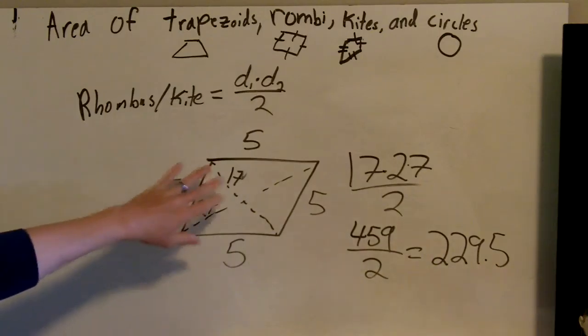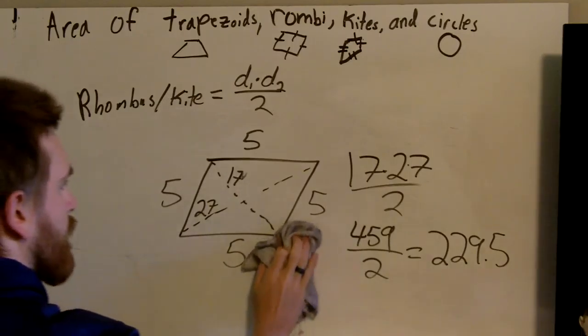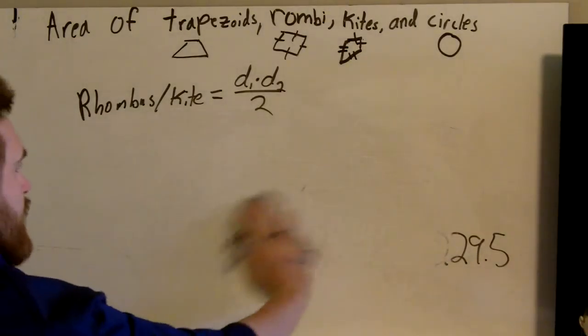27 times 17 is 459 divided by two is 229.5. So all I did is take the diagonal of each one and multiply them together.